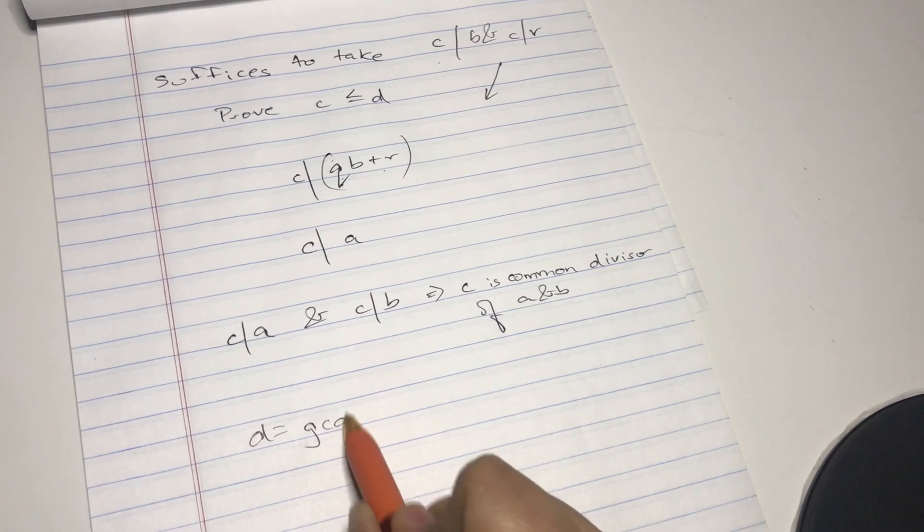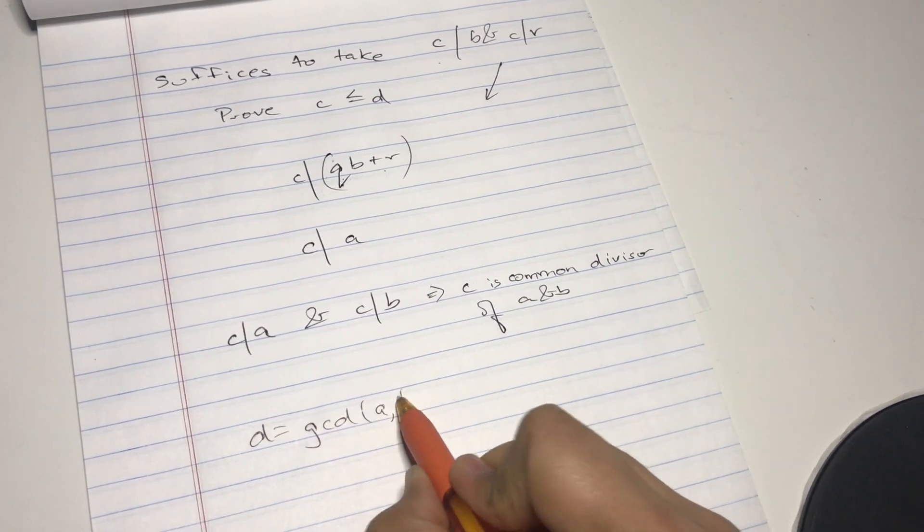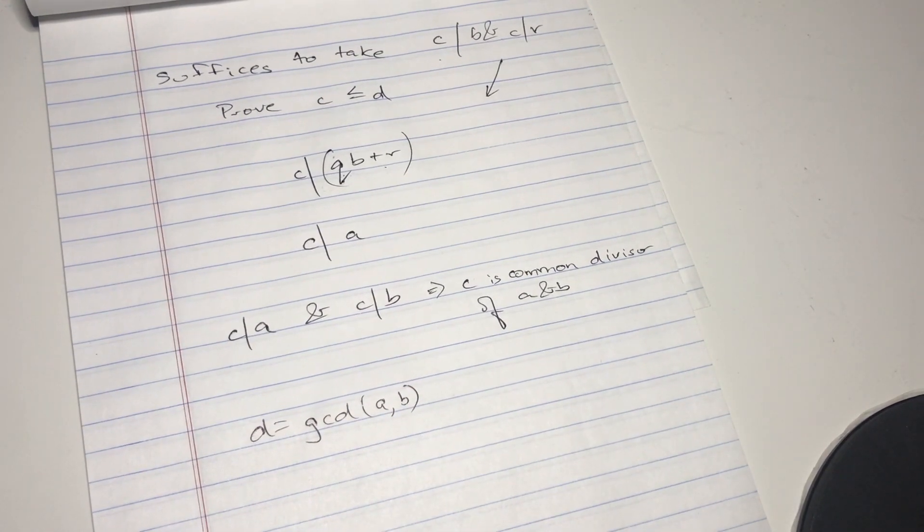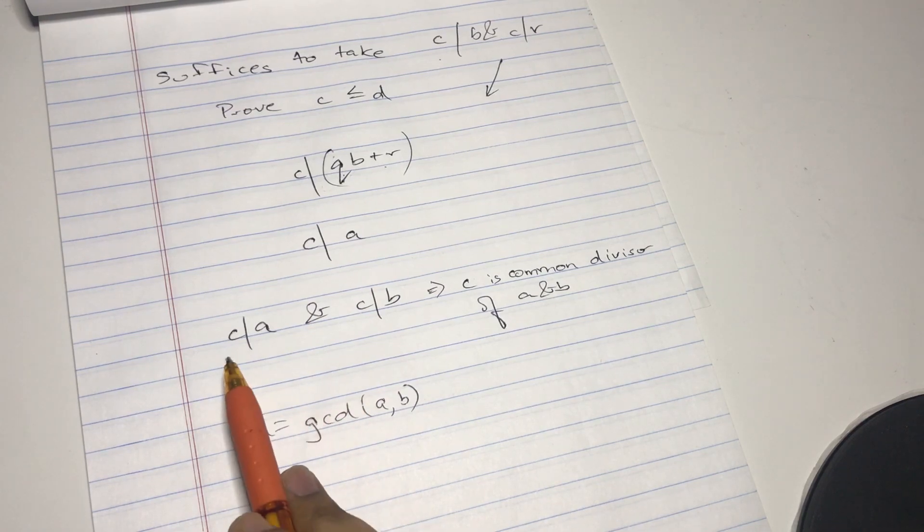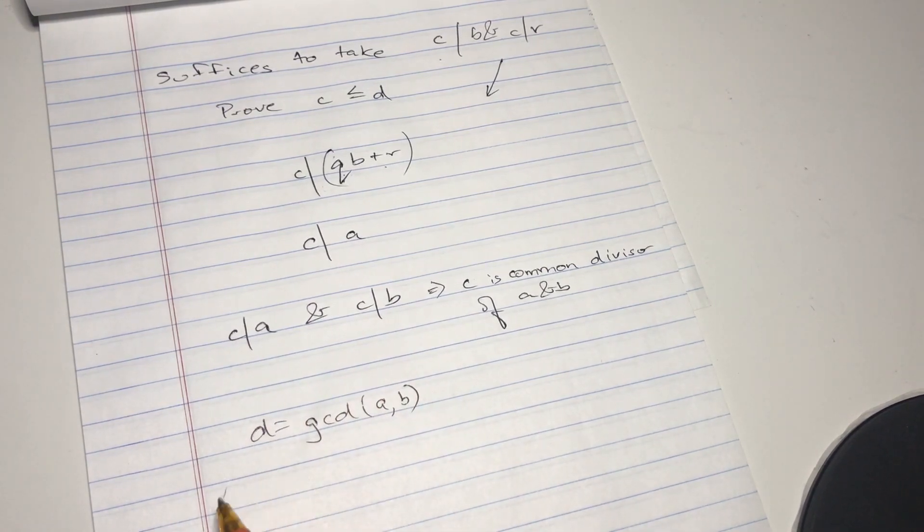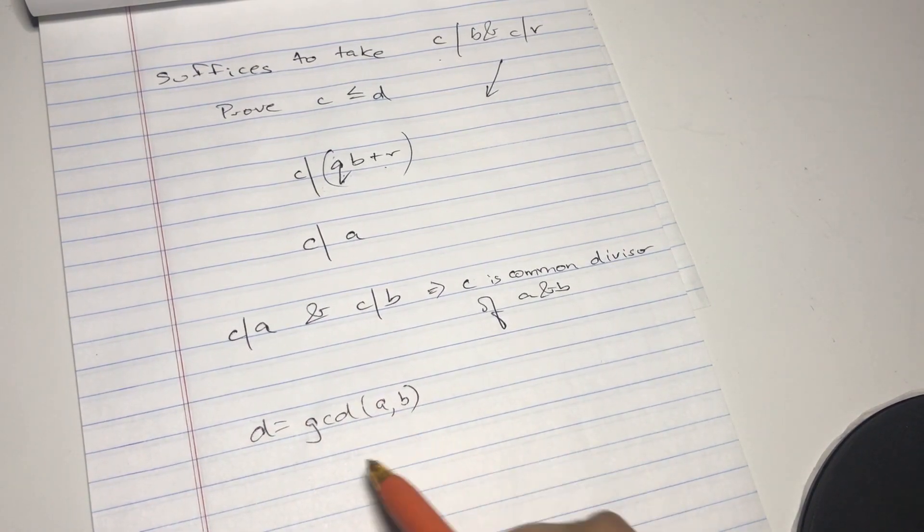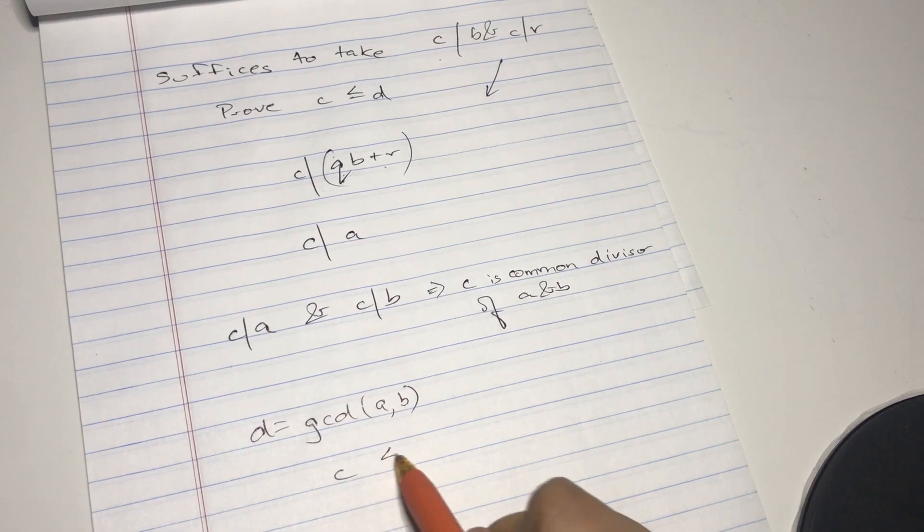So we already know c divides a and b. d is the greatest common divisor of a and b, so c has to be less than or equal to d, right?